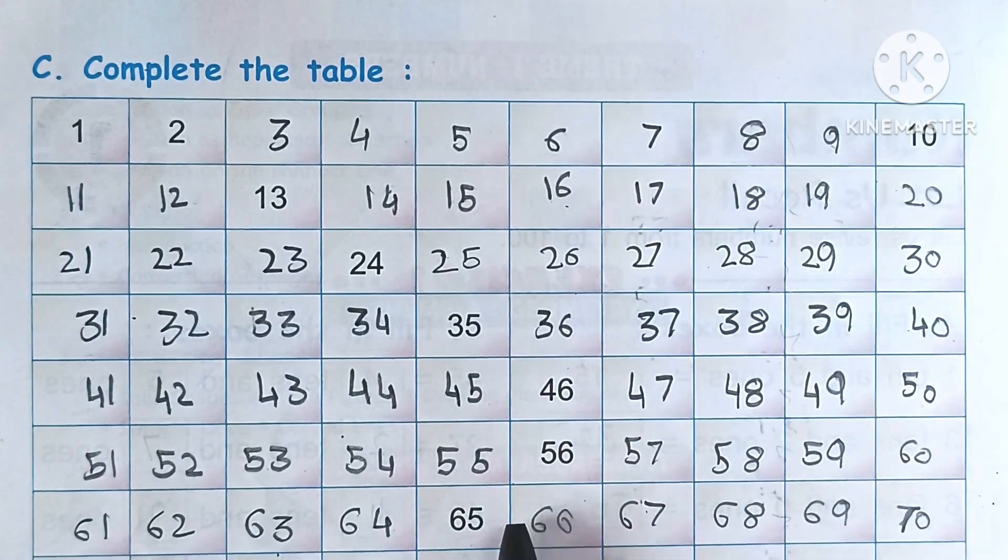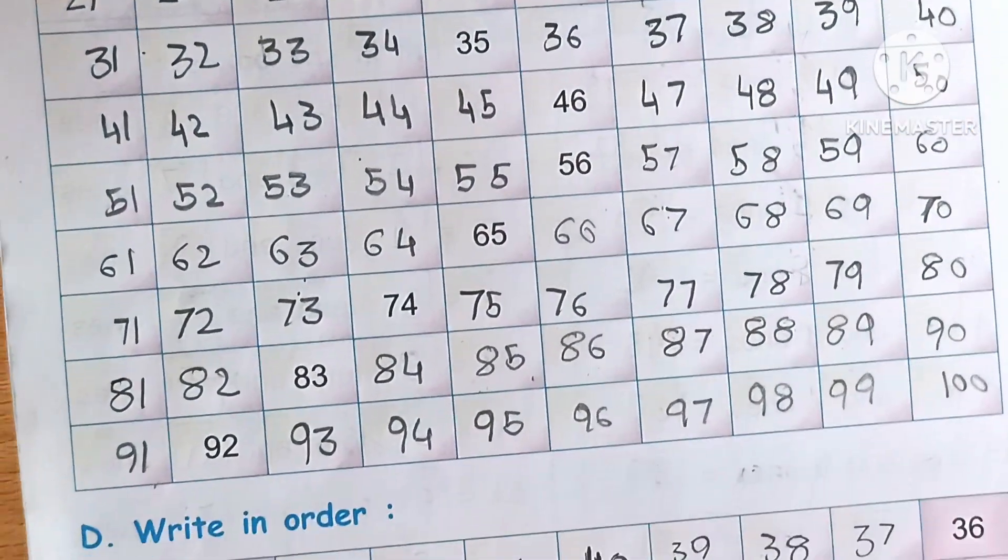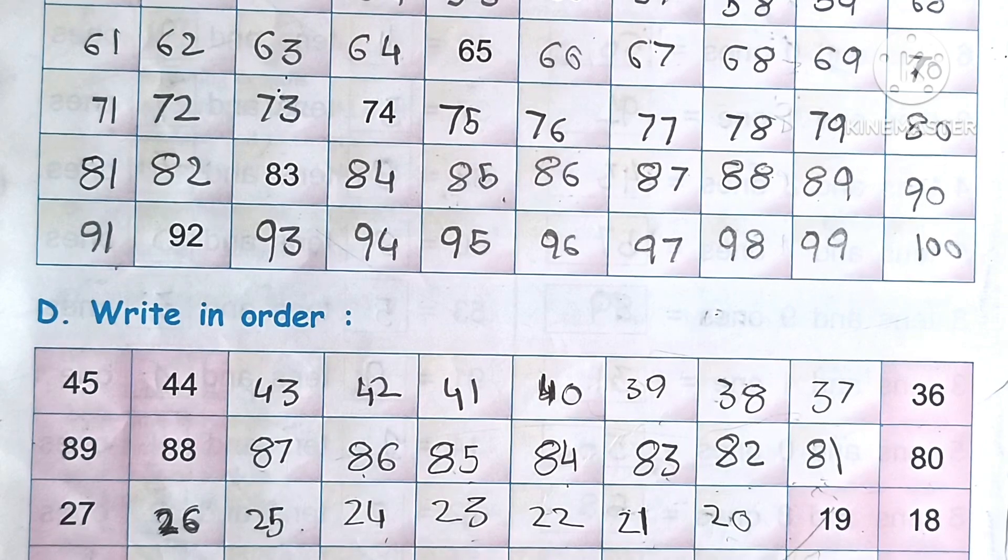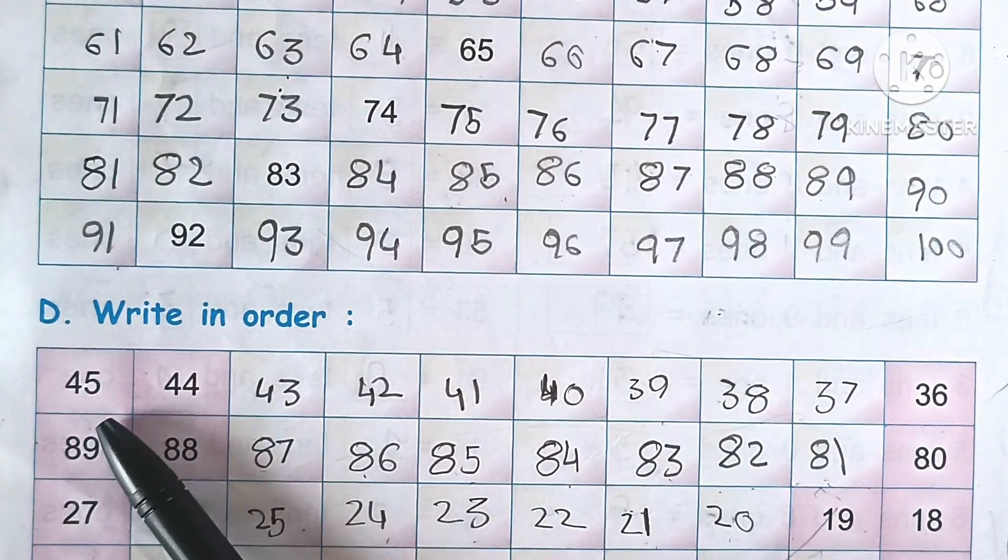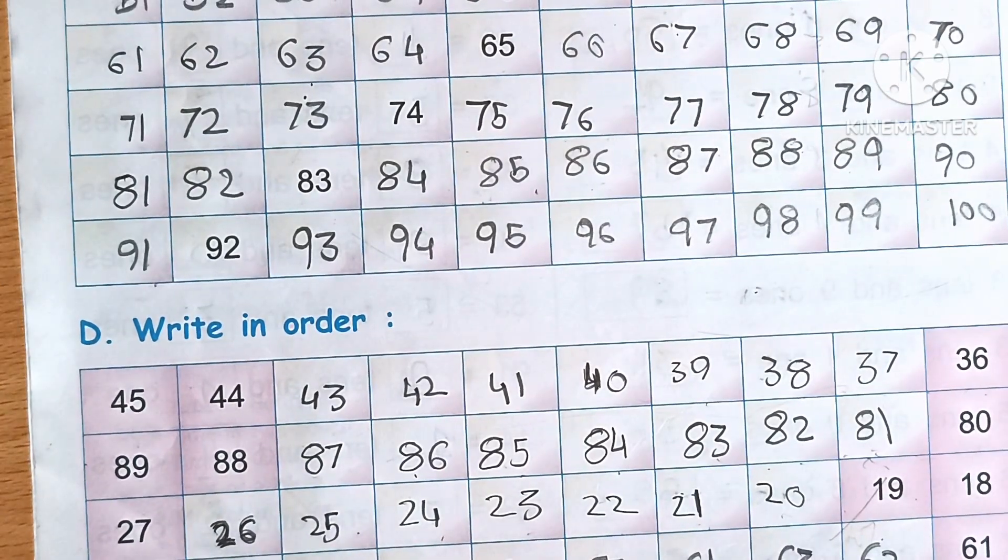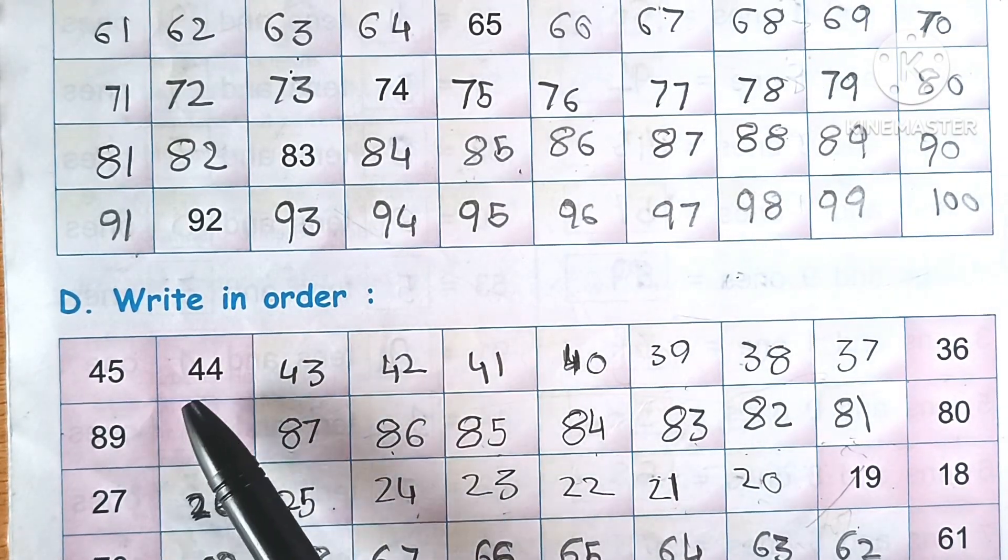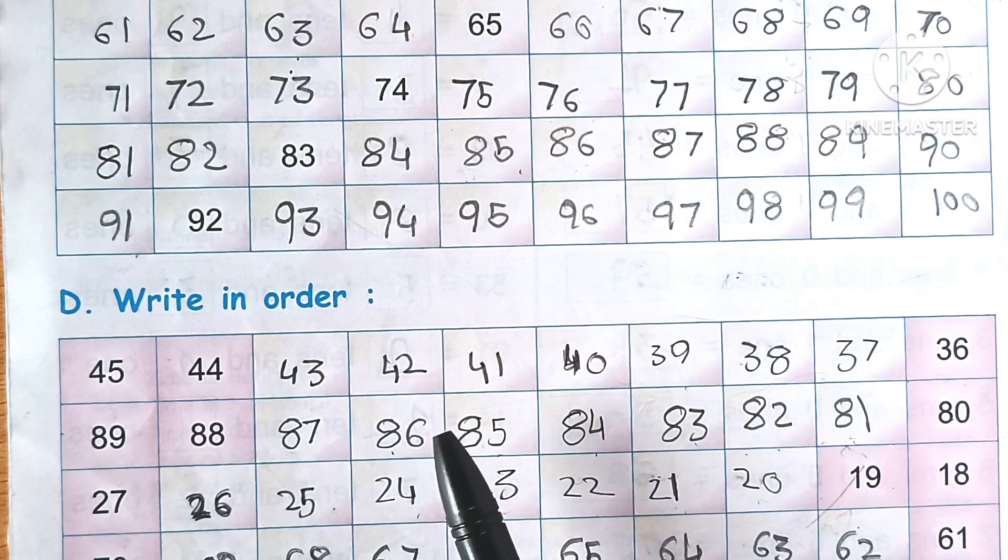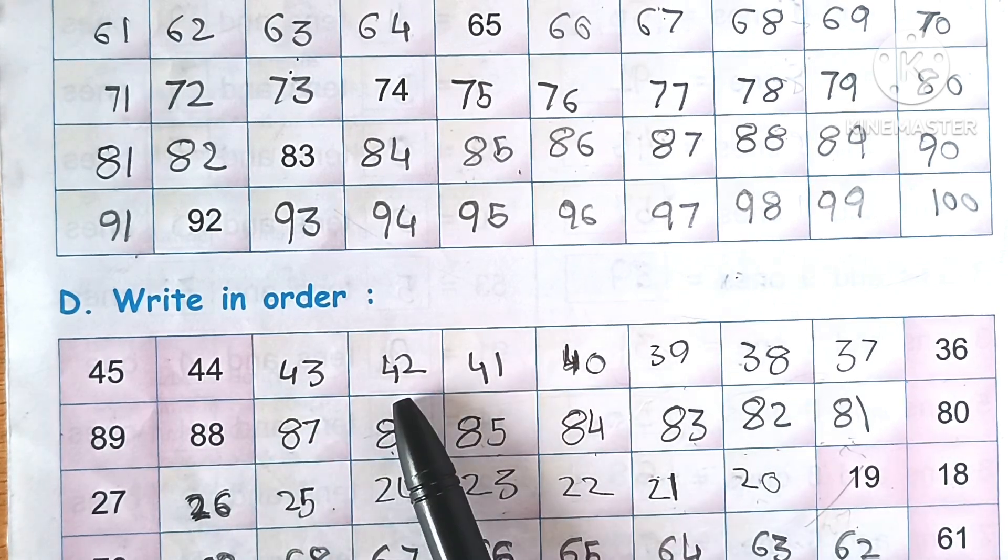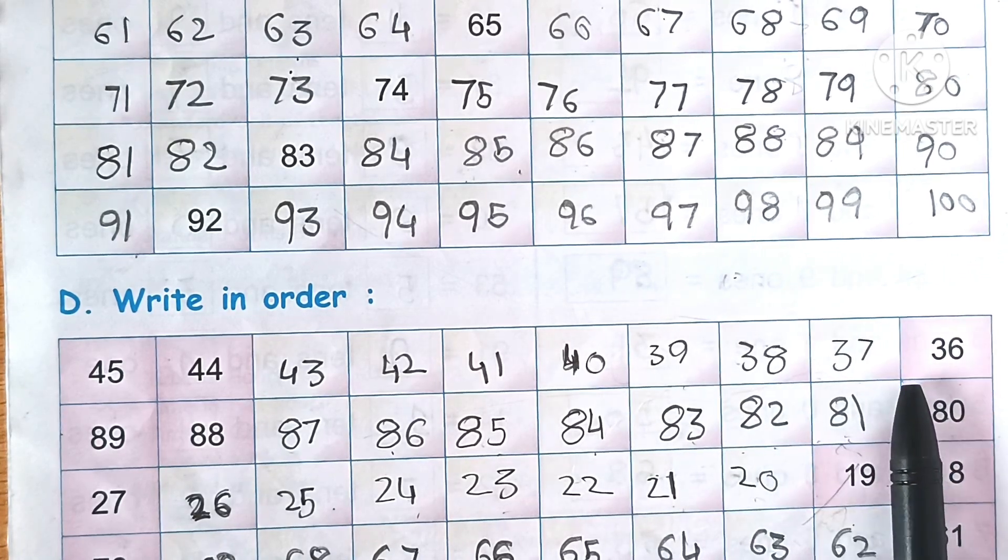Now next question D: write in order. Here are numbers: 45, 44, 43, 42, 41, 40, 39, 38, 37, and 36.